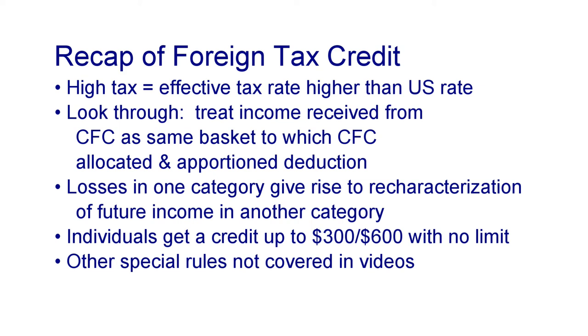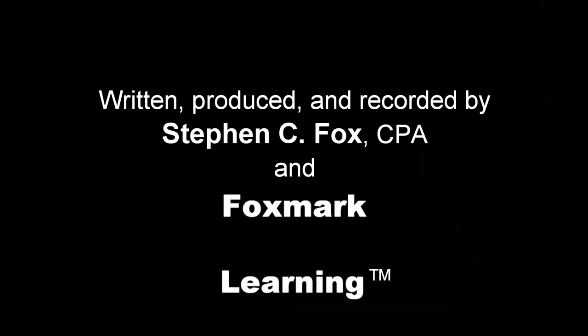Individuals may have paid small amounts of foreign withholding or other taxes on dividends, interest, or other income. If an individual's foreign income taxes are less than $300 per taxpayer, or $600 per married couple, they simply claim a credit for those taxes on Form 1040. They don't need to worry about the foreign tax credit limitation, basketizing, or any of the complex rules in this video — they don't file Form 1116. These foreign tax credit rules are quite complex and depend on the other rules covered in this course. I hope you found this helpful.